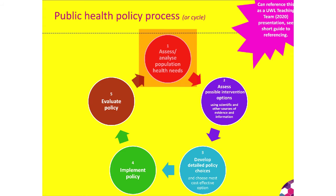This is more specifically how the public health policy process works — where public health decides on its own policies within, say, the Department of Health and Social Care. We usually start with assessing and analysing the population's health needs — the health needs assessment phase, the Joint Strategic Needs Assessment. We look at the needs of the community and may do community consultations to find out what communities really want.